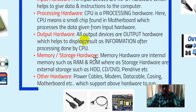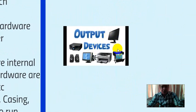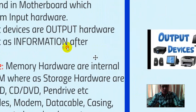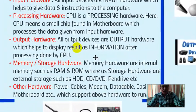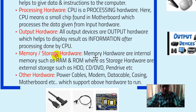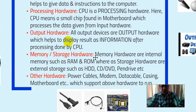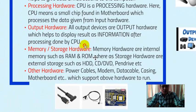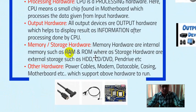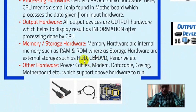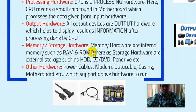Output devices help to display results as information after processing done by the CPU. When the CPU finishes processing, it gives the output or result through these output devices. Next is memory or storage hardware. Memory hardware includes internal memory such as RAM and ROM, whereas storage hardware includes external storage such as SSD, hard disk, CD, DVD, and pen drive.